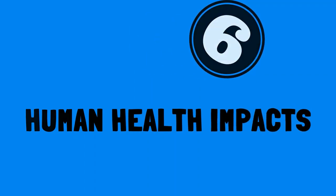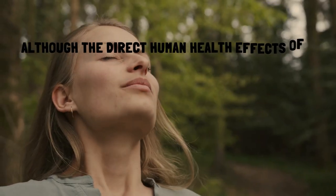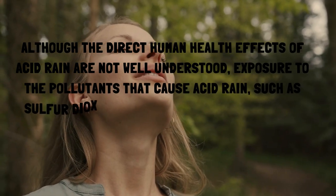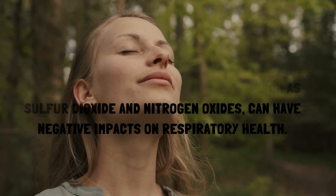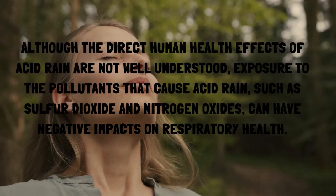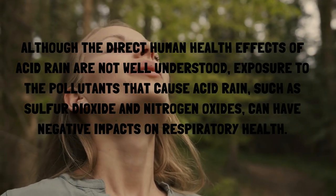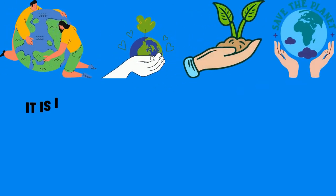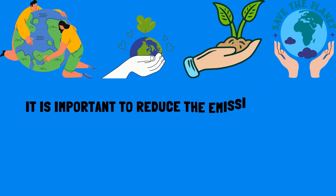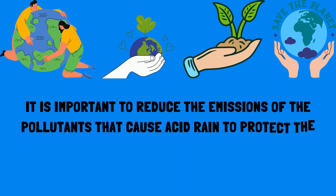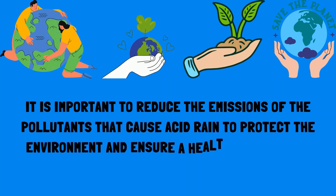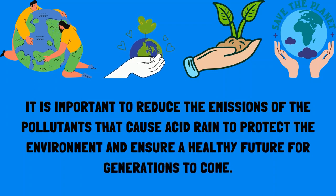Number six, human health impacts. Although the direct human health effects of acid rain are not well understood, exposure to the pollutants that cause acid rain — such as sulfur dioxide and nitrogen oxides — can have negative impacts on respiratory health. It is important to reduce the emissions of the pollutants that cause acid rain to protect the environment and ensure a healthy future for generations to come. Thank you.